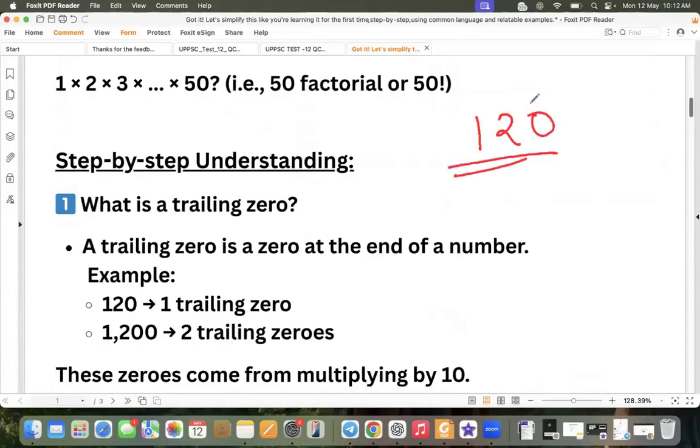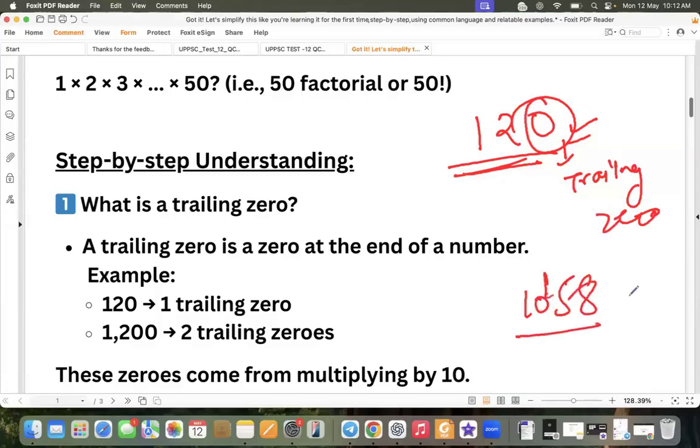If you take the example of a number 120, 0 is trailing 0. Ek number ke end me jo 0 hota hai, that is trailing 0. Not in between. Like 1, 0, 5, 8 - ye trailing 0 nahi hai. At the end of the number, that is trailing 0.